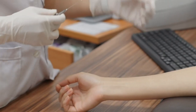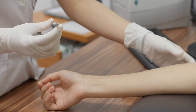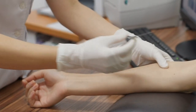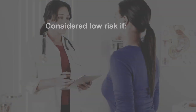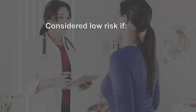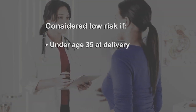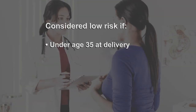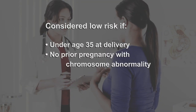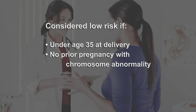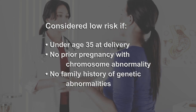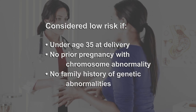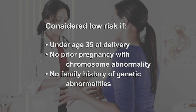For women who are low risk, a blood test is drawn from the mother in the first and second trimester. A woman is typically considered low risk if she will be under age 35 at delivery, hasn't had a prior pregnancy with a chromosome abnormality, and has no family history of genetic abnormalities.